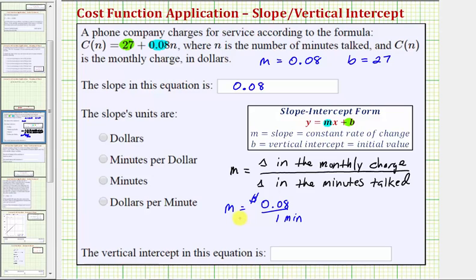So the slope, which represents the constant rate of change, is 0.08 dollars or eight cents per minute, often written as 0.08 dollars per minute, which again represents the constant rate of change.